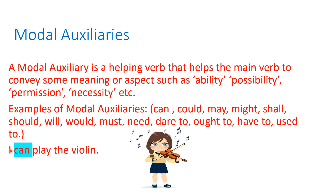Look at this sentence: I can play the violin. Here, 'can' is highlighted. Can is a modal auxiliary or a helping verb that helps the main verb 'play' to convey some meaning or aspect — in this case, ability.